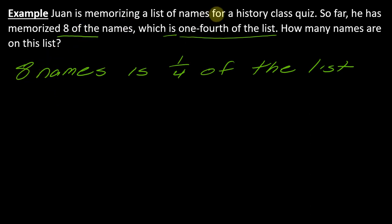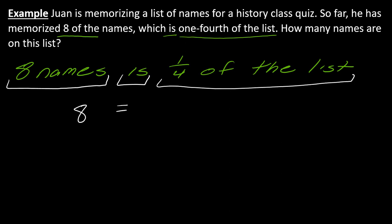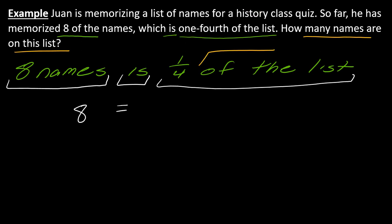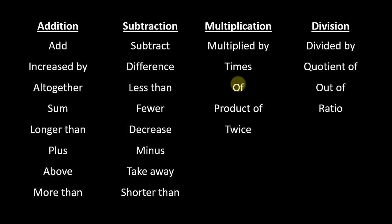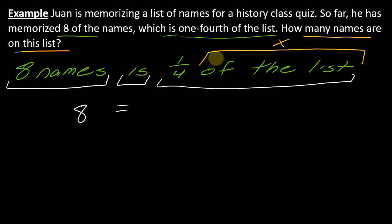By reframing this whole problem, this actually is a mathematical expression. Eight names — that's just the number eight. Then we have 'is,' which is going to be the equal sign. And then we've got this last part: one fourth of the list. I don't know how many names are on the list — that's what I'm trying to find. So the total number is going to be X, our unknown. Now I've got to interpret 'one fourth of the list.' What does 'of' mean? Going back to the list, 'of' refers to multiplication. So this is one fourth times X.